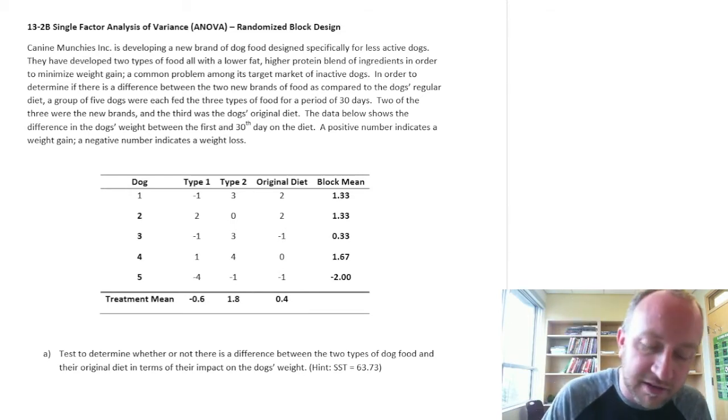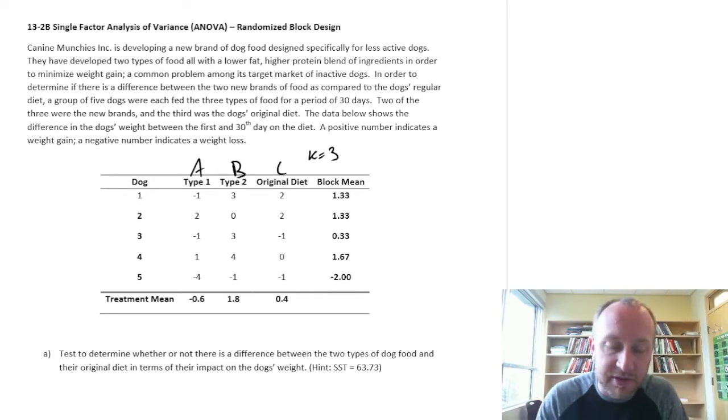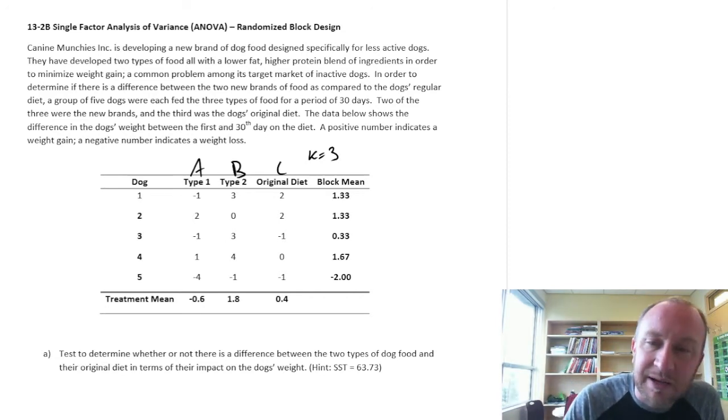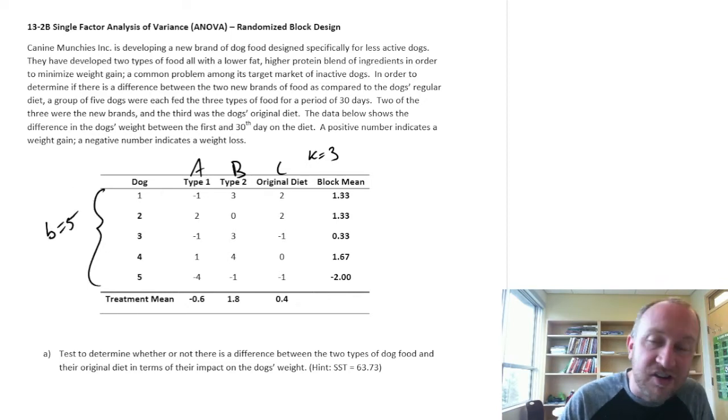So here let's call these our three treatments A, B and C. So K is equal to 3. I have type 1 and type 2 dog foods, plus I have their original diet. And here we have our blocks, five blocks. These are our dogs.